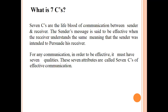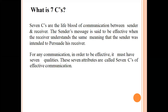The Seven C's are the lifeblood of communication between sender and receiver. In our last lecture we discussed who is the sender and who is the receiver, who is the source and who is decoding the message. The sender's message is effective when the receiver understands the same meaning the sender intended. If the sender wants to say one thing and the receiver understands something else, it is not good for either party, the company, the research project, or anything you are pursuing.